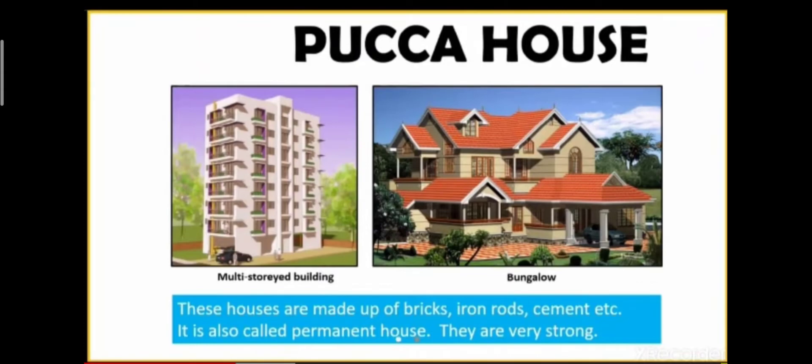Pakka houses are made up of bricks, iron rods, cement, etc. They are also called permanent houses and they are very strong. The examples of pakka houses are multi-storey buildings and bungalows.